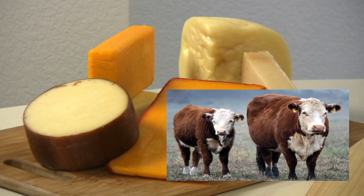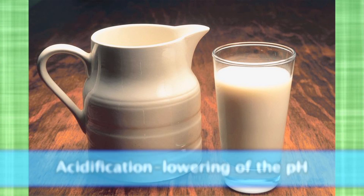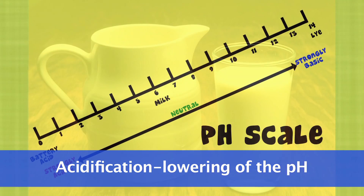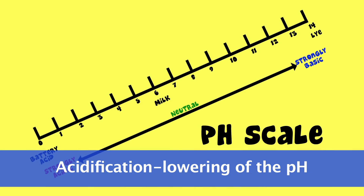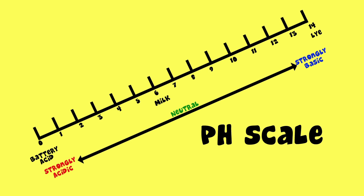Generally, cheese making starts with acidification. Acidification is the lowering of pH, which in turn increases the acid content of the milk, making it more acidic. Usually, this process is performed by bacteria.